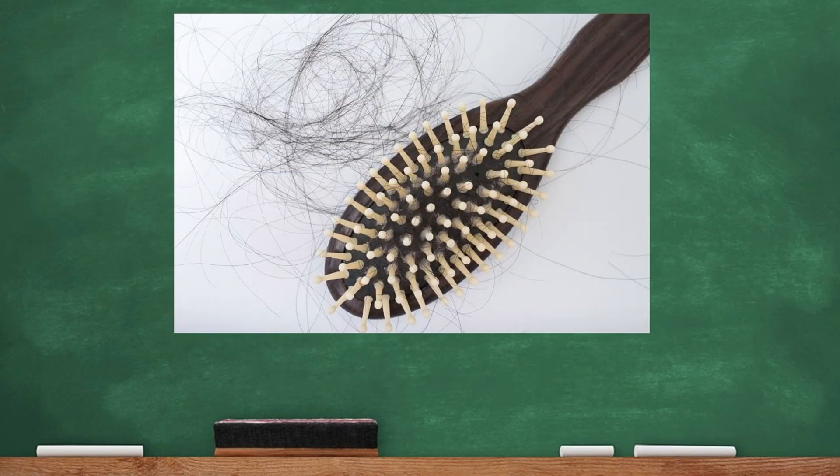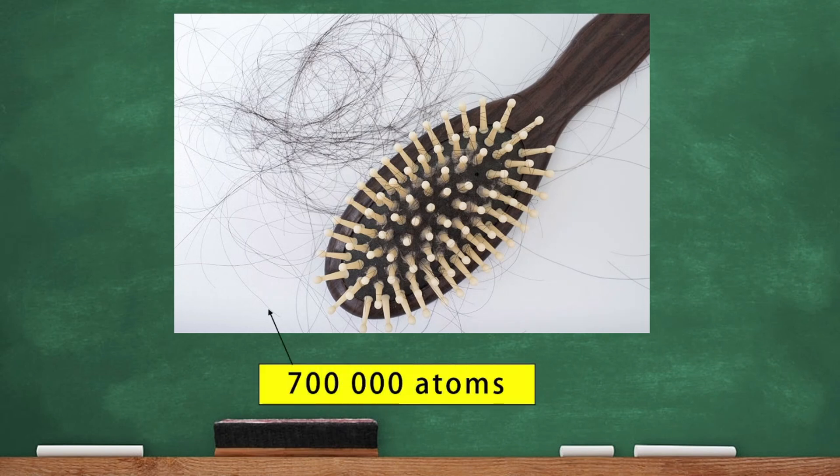Get a strand of hair and observe the thickness of this strand of hair. Even though the thickness of a strand of hair is very small, it can actually fit 700,000 atoms within its thickness. Atoms are so small that that large number, 700,000 pieces of atoms, can fit in just the thickness of a strand of hair.